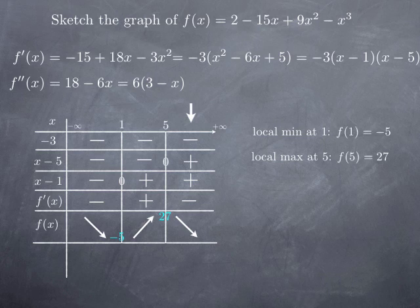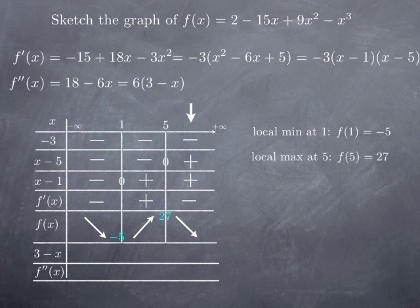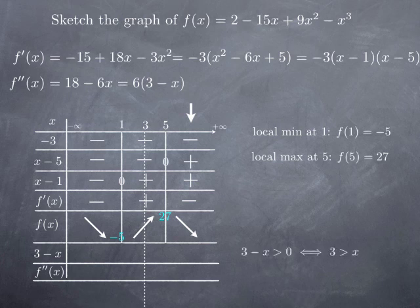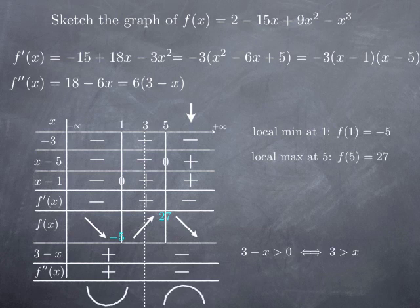So the second derivative is of the sign of 3 minus x. 3 minus x changes sign at 3. And it is positive if x is less than 3, in other words, to the left of 3. So it is positive on the left of 3 and negative otherwise. In terms of concavity, it means that the function is concave up on the interval from negative infinity to 3 and concave down on the interval from 3 to infinity.